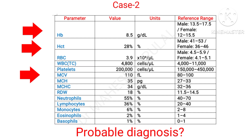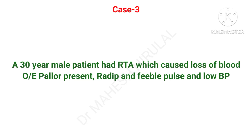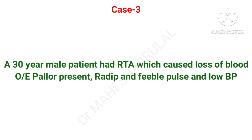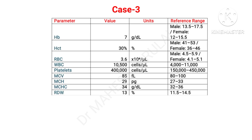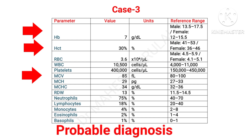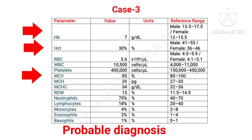A 30-year-old male patient had a road traffic accident causing loss of blood. On examination pallor is present, rapid and feeble pulse, and low BP is recorded. In this patient the probable CBC shows reduced HB, reduced hematocrit, and normal MCV. What will be the probable diagnosis?